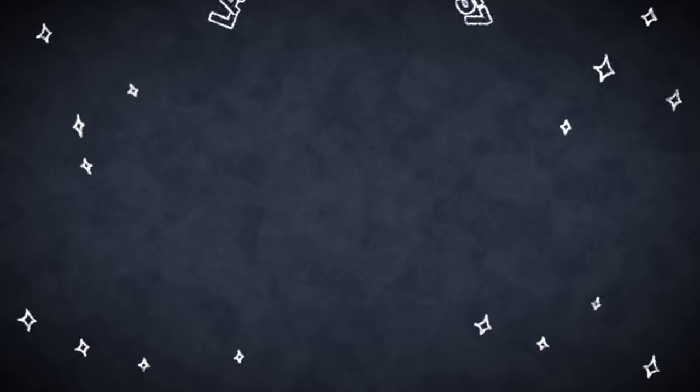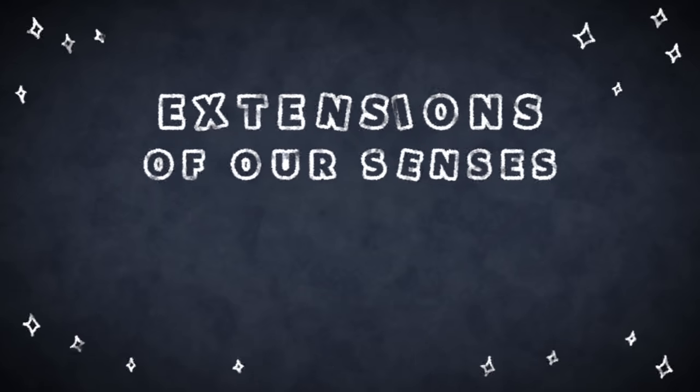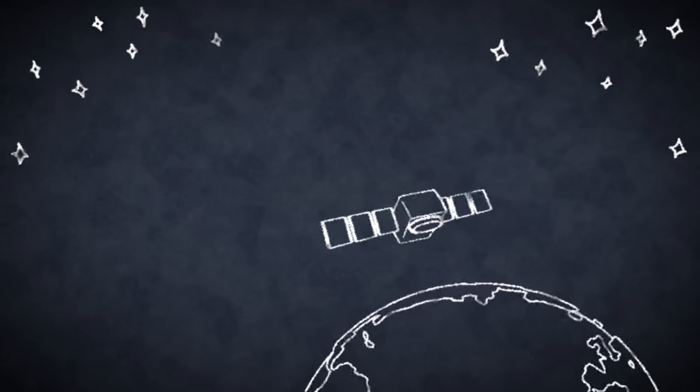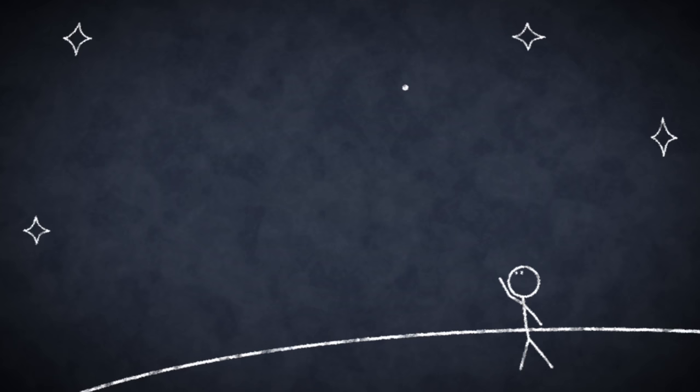Satellites are an extension of our human senses into space, some looking down onto Earth below and others looking out into the universe. The ones you can see with the unaided eye are in low Earth orbit, a few hundred miles up.